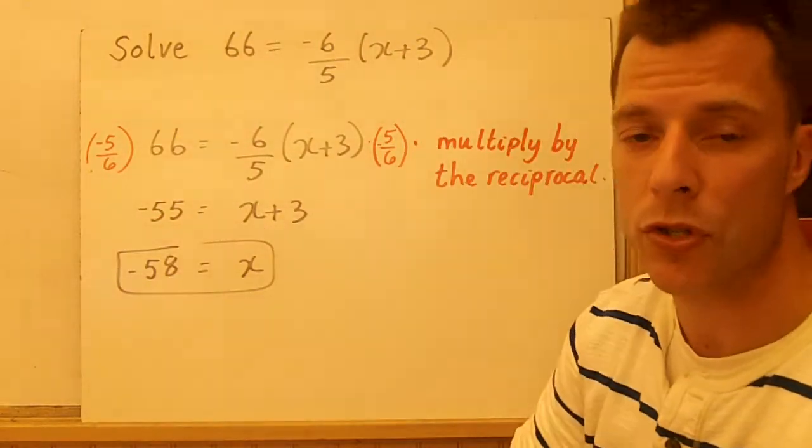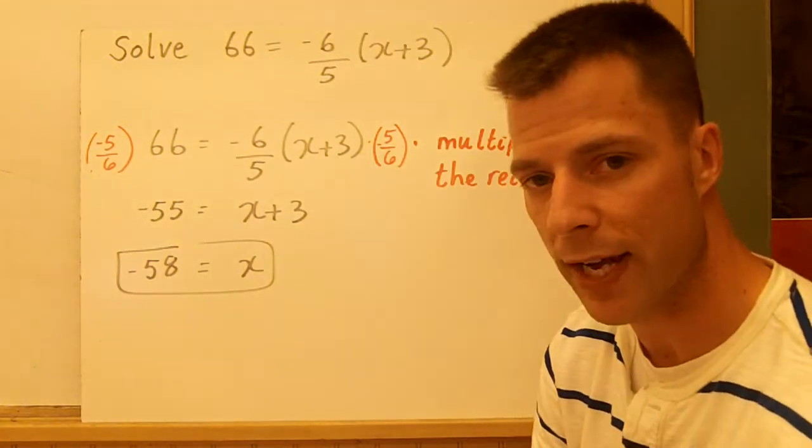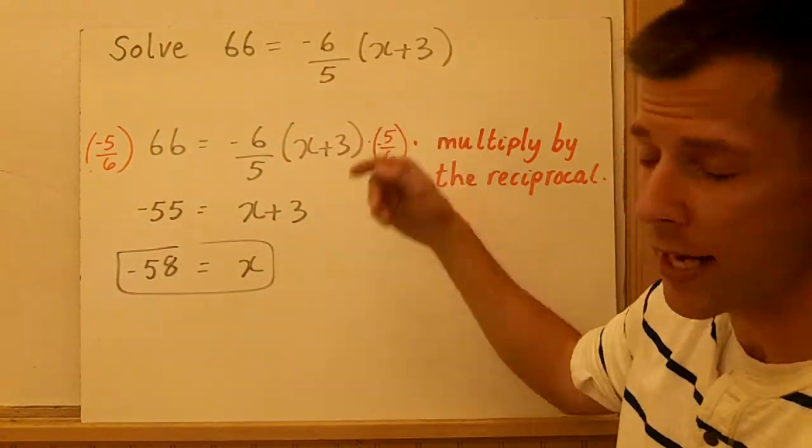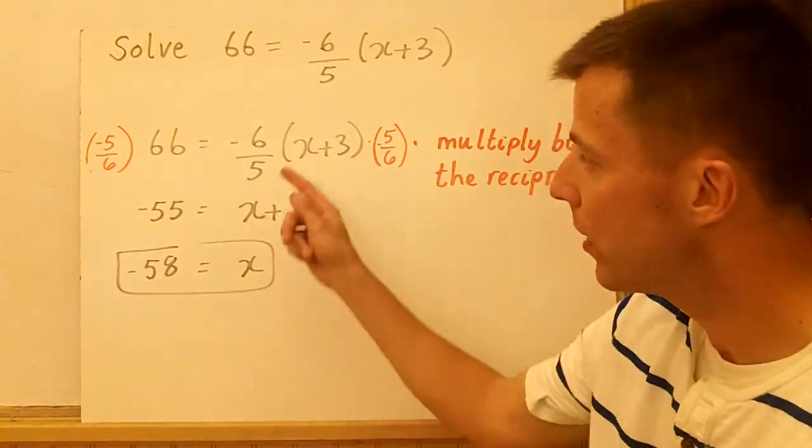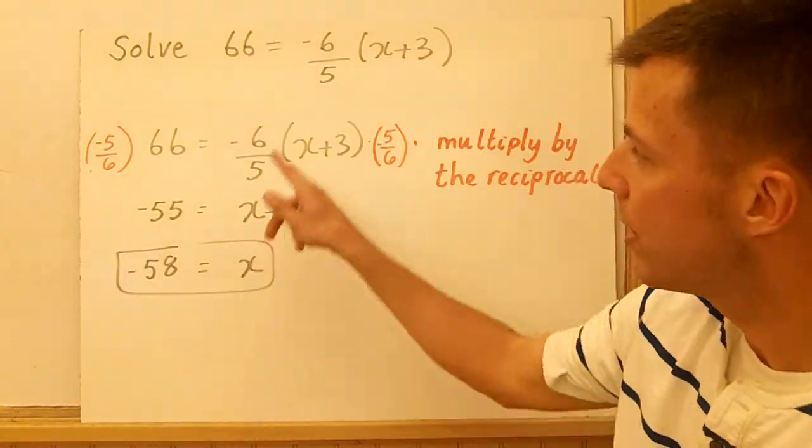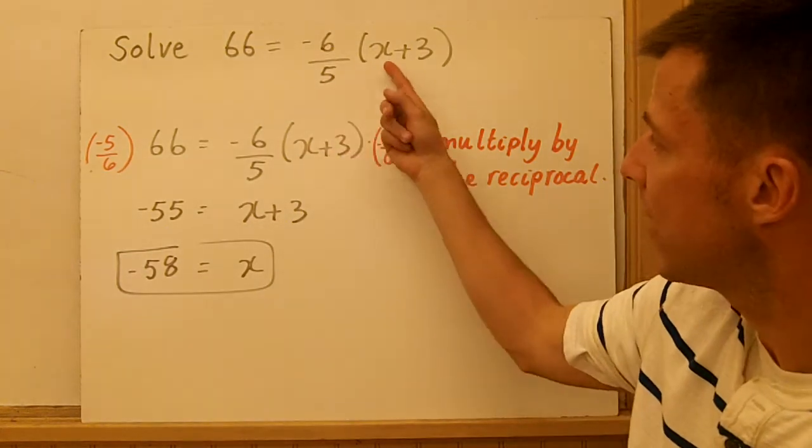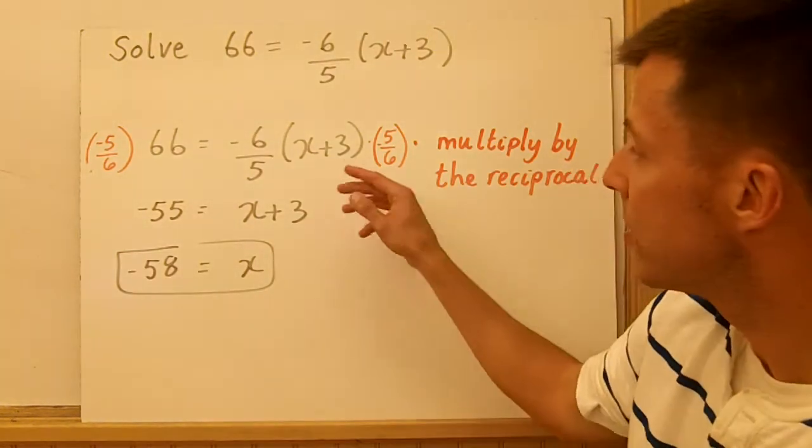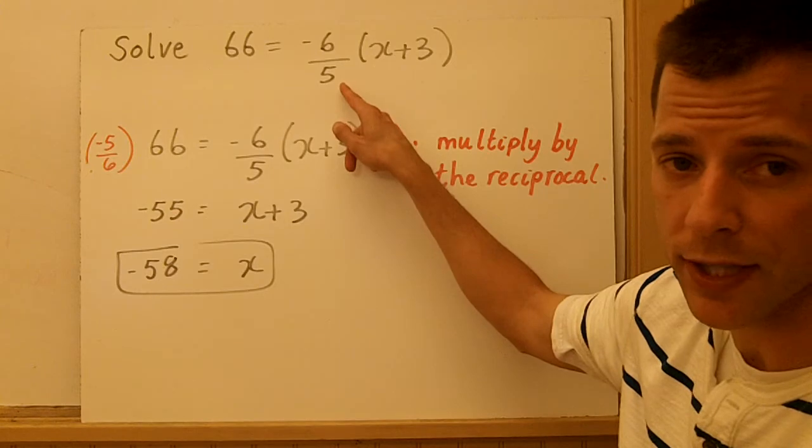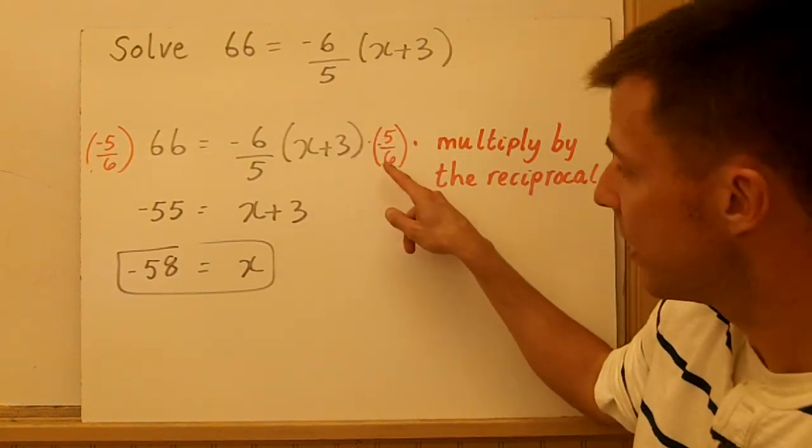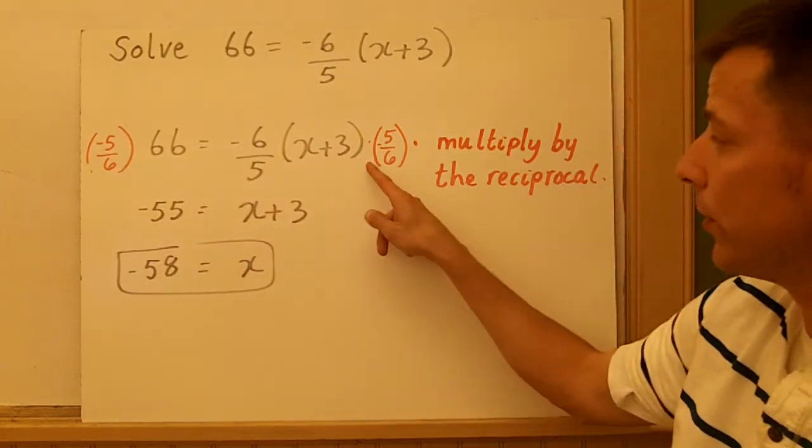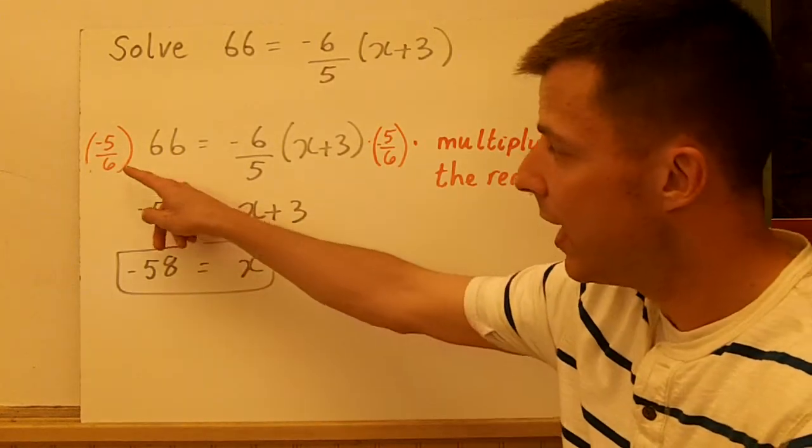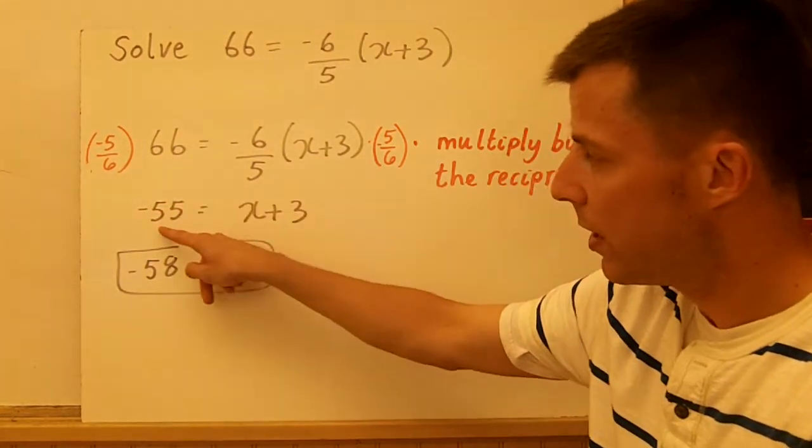Last example goes back to the first slide when I say always multiply or divide last. We're going to solve 66 equals negative 6/5 times the quantity x plus 3. In this case, I'm not going to distribute because the number out front is a fraction and it's not going to simplify very easy. So I can multiply each side by the reciprocal of negative 6/5, which is negative 5/6. These two numbers will become 1, so that quantity x plus 3 comes down, and negative 5/6 of 66 is negative 55.